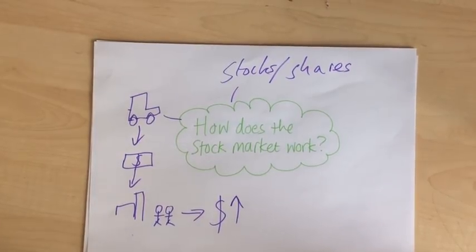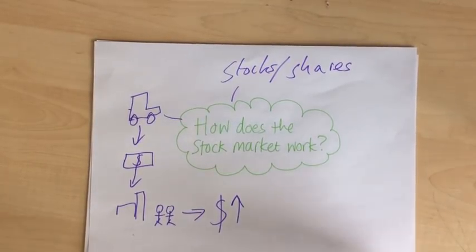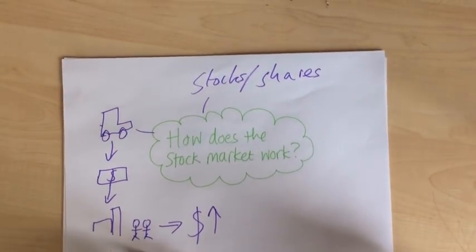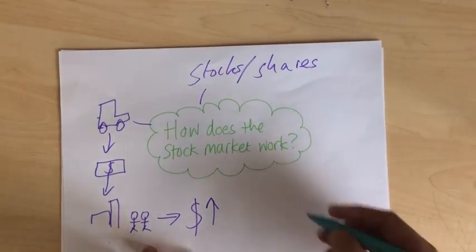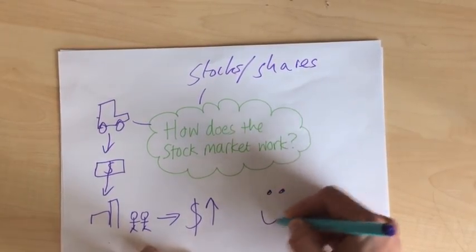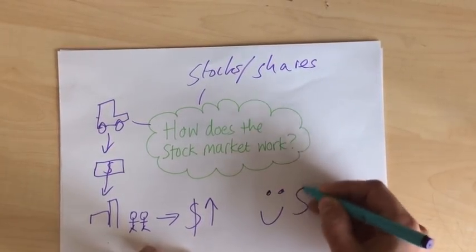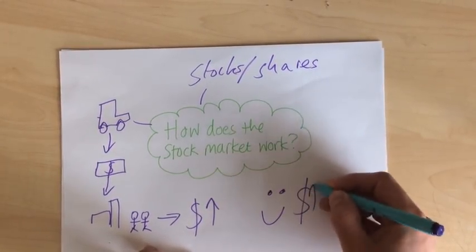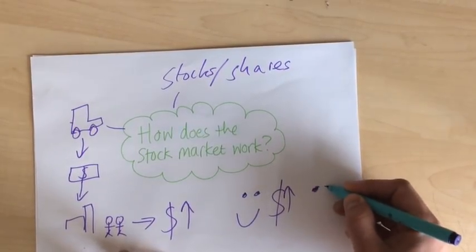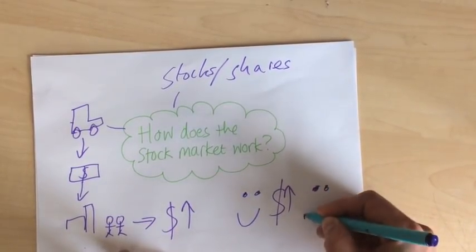However, if the company does badly, the value will go down. We'll represent that with a smiley face and the dollar sign where it goes up, but a sad face where it goes down.